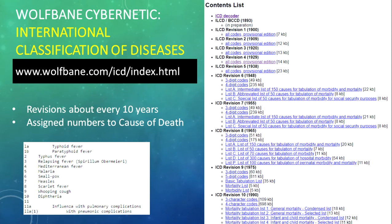So I went to a website called Wolfbane Cybernetic. They have collected all of the International Classification of Diseases, or ICD, and uploaded them online for free access. The ICD is revised about every 10 years, and what they do is assign numbers to a cause of death. So in the case of typhus fever, whether they called it malignant fever, Irish fever, or ship fever, all would have had the number two next to them. So anyone in whatever country reading that would know they were all talking about typhus, regardless of what they called the actual disease.